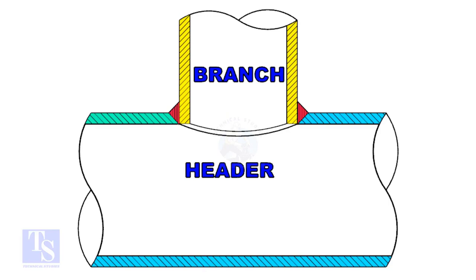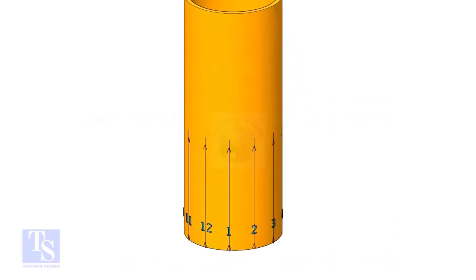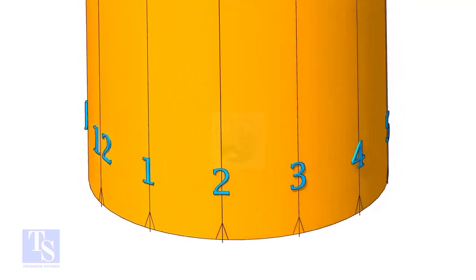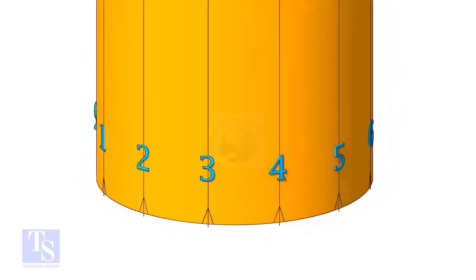In this method, the branch size shall be 2 to 3 inches less than the header size. Divide the branch pipe into equal parts. In this case, I divide the pipe into 12 parts.